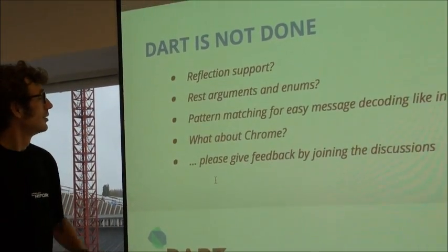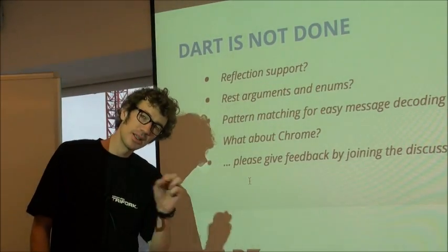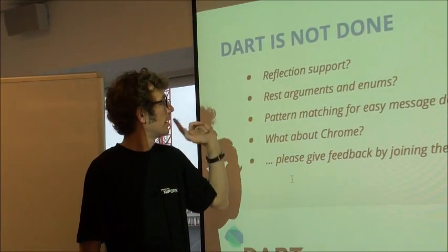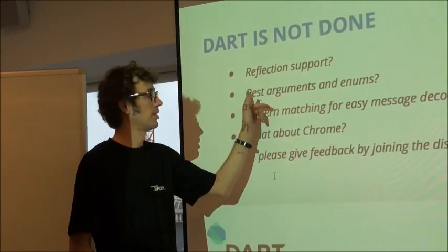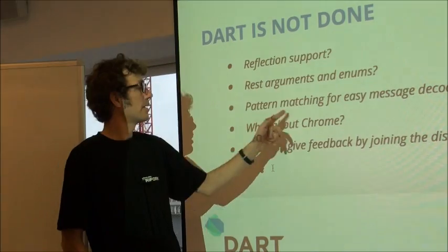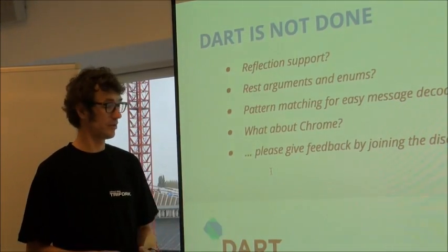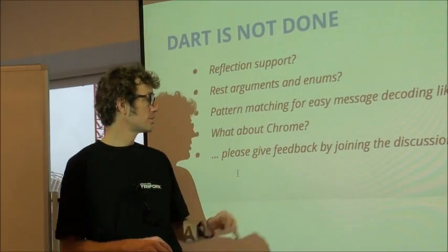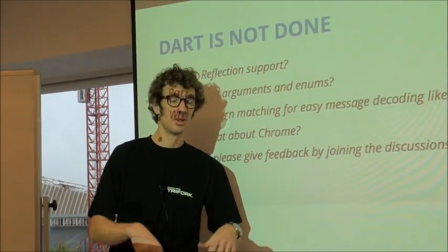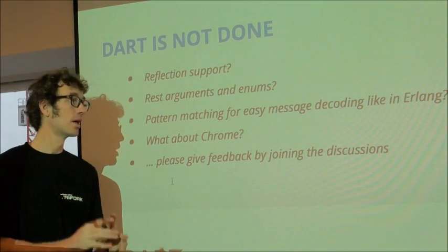Dart is not done — there's still a bunch of things they haven't implemented or decided. There's no reflection support yet, but that's very likely going to be based on mirrors — Gilad told me that offline. There are various minor language things like variable number of arguments, enum support, and possibly pattern matching as in Erlang, which would help deciphering messages between isolates. The connection to Chrome: it's not in Chrome yet. Eventually when it stabilizes, it will be part of the Chrome experience, but right now it's separate because this is a technology preview.